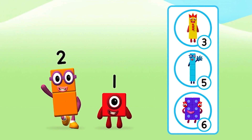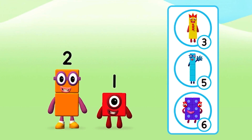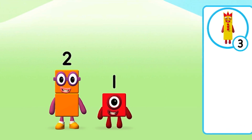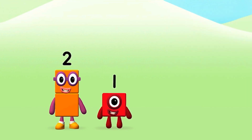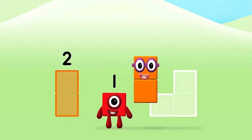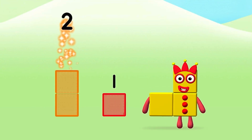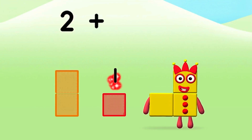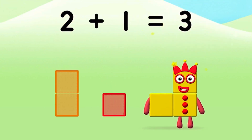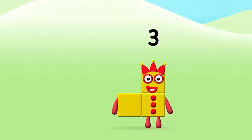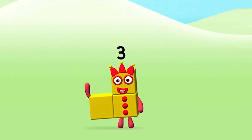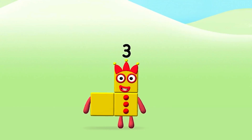What number block will you make when you add these two number blocks together? Correct! You chose the right answer! Now add the number blocks together! 2 plus 1 equals 3. Congratulations! You made number block 3!